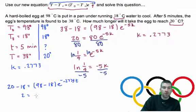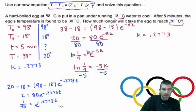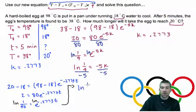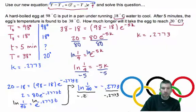2 equals 80 E to the negative .2773T. So, divide both sides by 80. That's going to be 1/40 equals E to the negative .2773T. I'm getting low on space here. Take the natural log of both sides. And, when you do that, you get the natural log of 1 over 40 is equal to negative .2773T. And just divide both sides by that negative .2773.